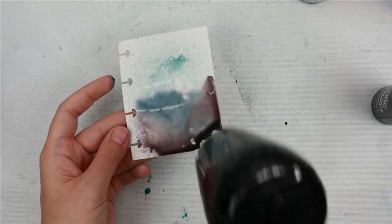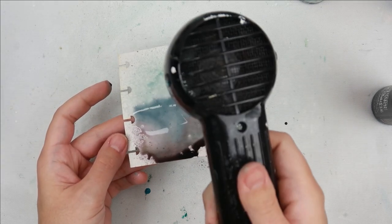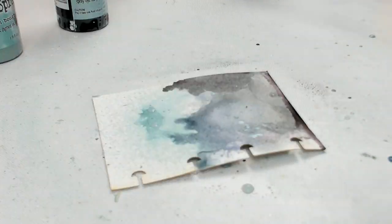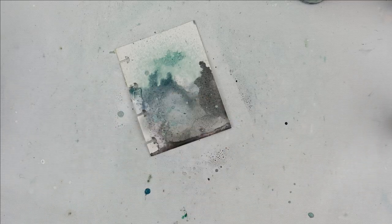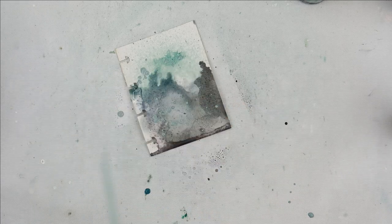I spray it with a little bit of water and let it kind of flow where it wants to. I'm going to dry it. After I dry it I'm going to splatter on some Speckled Egg Distress Oxide Spray.